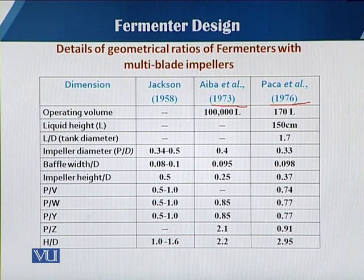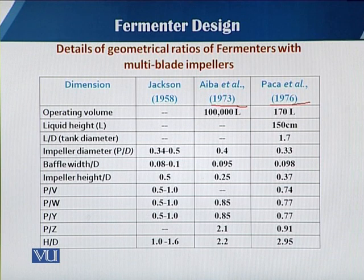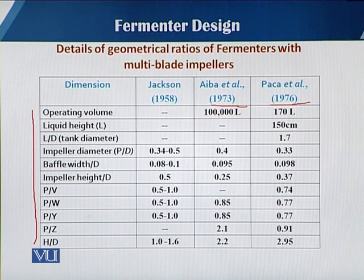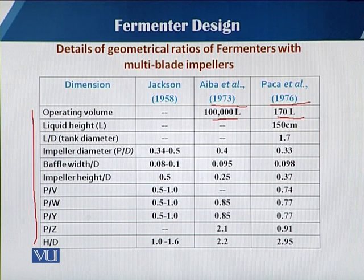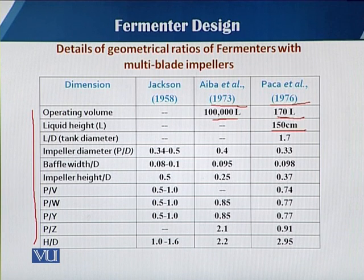In these three models there are details of geometrical ratios for fermenters having more impellers with multi-blade impellers. You can see in this slide the different geometrical ratios. The operating volume was reported only by Pekka et al and Iba et al. Iba et al reported a 100,000-liter capacity fermenter, and Pekka et al reported a 170-liter fermenter. The working volume height was only reported by Pekka et al at 150 centimeters, and the ratio L/D — working height to fermenter diameter — is 1.7, a very critical dimension.